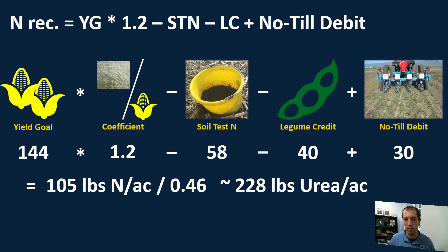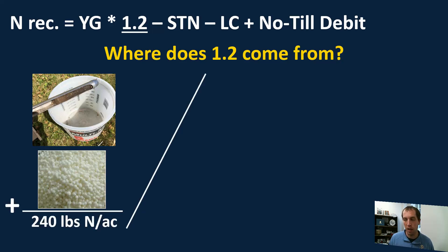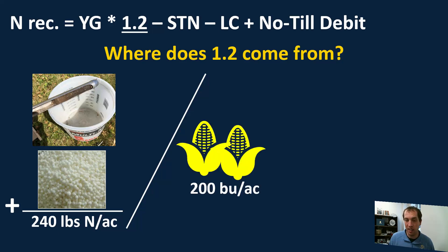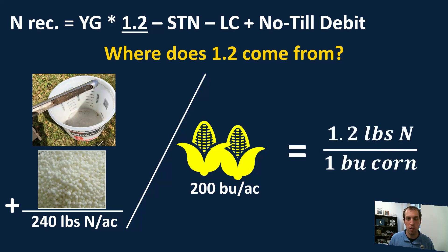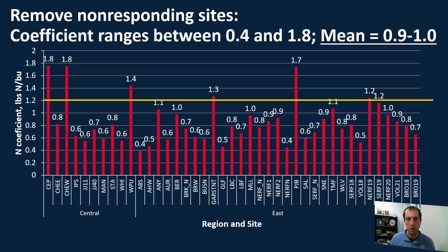So how can we improve? Looking at the equation again, one thing that has changed over the years is the coefficient or multiplier of 1.2. That multiplier is derived by taking our soil test nitrogen from 0–24 inches, adding the nitrogen needed from fertilizer — say 240 pounds of N per acre — then dividing by bushels per acre, which gives approximately 1.2 pounds of N per bushel of corn. But how accurate is that number today? Looking at our data from 45 locations, the y-axis now shows the nitrogen coefficient. We see that while traditionally the average was about 1.2, our data actually shows that average is much lower — around 0.9 to 1.0 depending on the region.